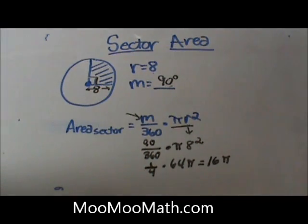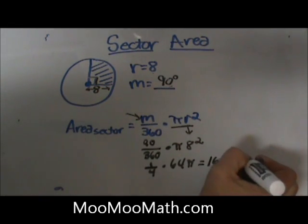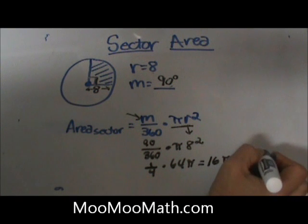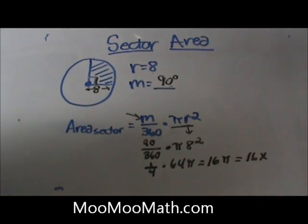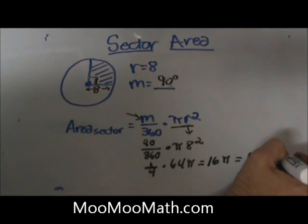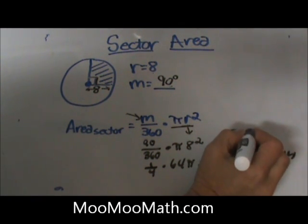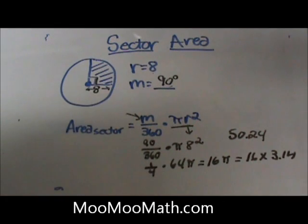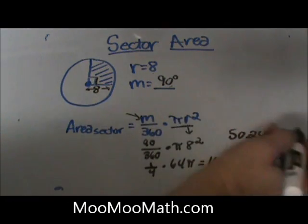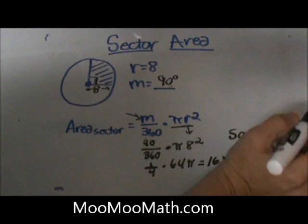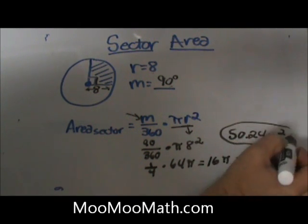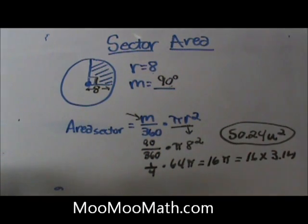If you need to write that as a decimal, just type in your calculator 16 times and hit the π key or 3.14 and you should get 50.24. Don't forget to put your units. It's either unit squared, inches squared, or some type of unit, but it is area, so we're going to square our units.